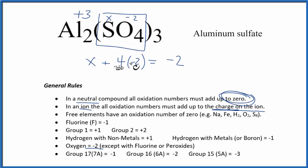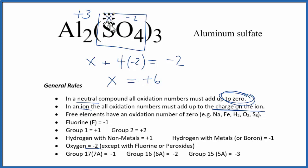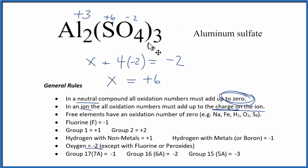X plus minus eight equals minus two. Adding eight to each side gives X equals plus six. So the oxidation number on sulfur in the sulfate is plus six. Now we know the oxidation numbers for each element in aluminum sulfate. This is Dr. B with the oxidation numbers for Al₂(SO₄)₃, aluminum sulfate. Thanks for watching!